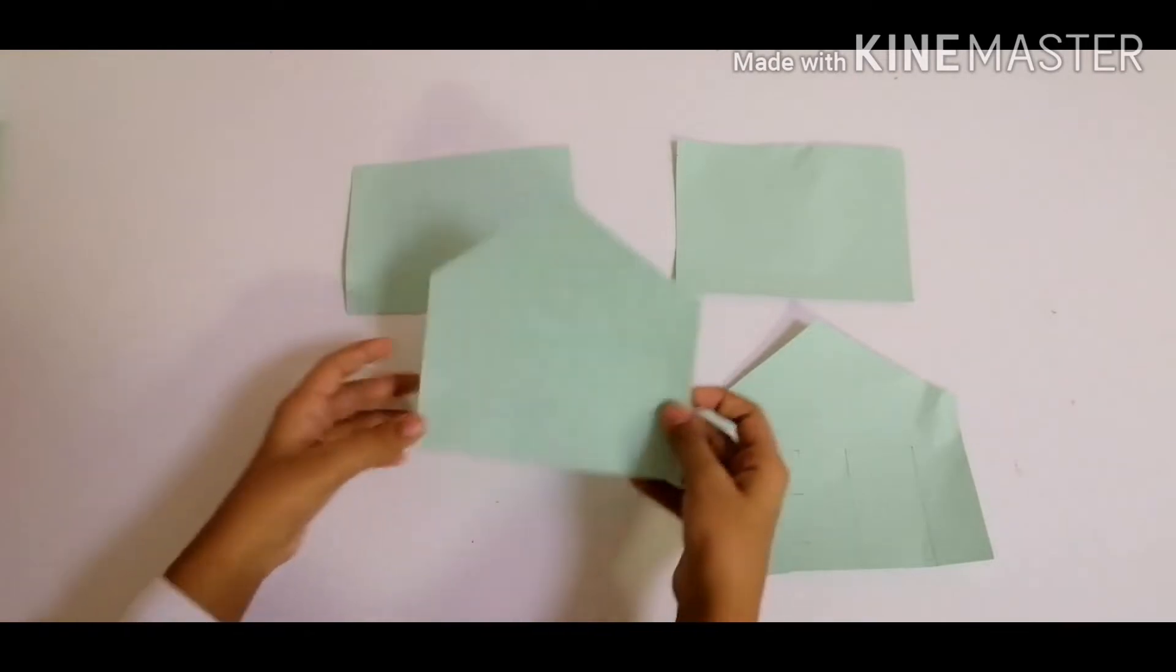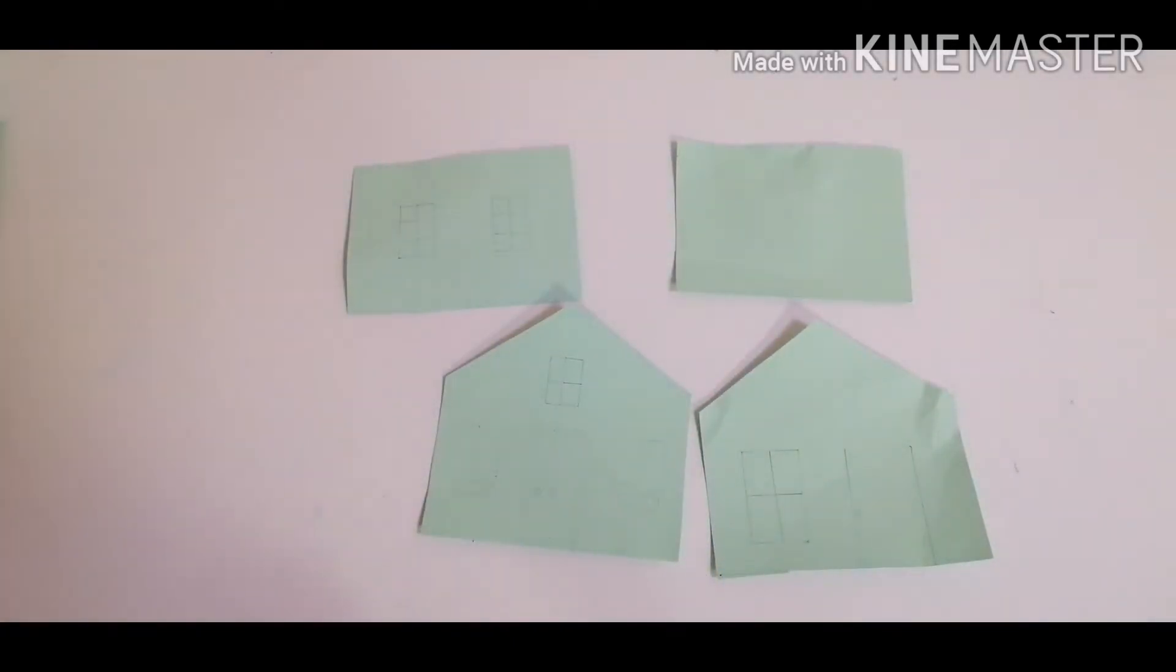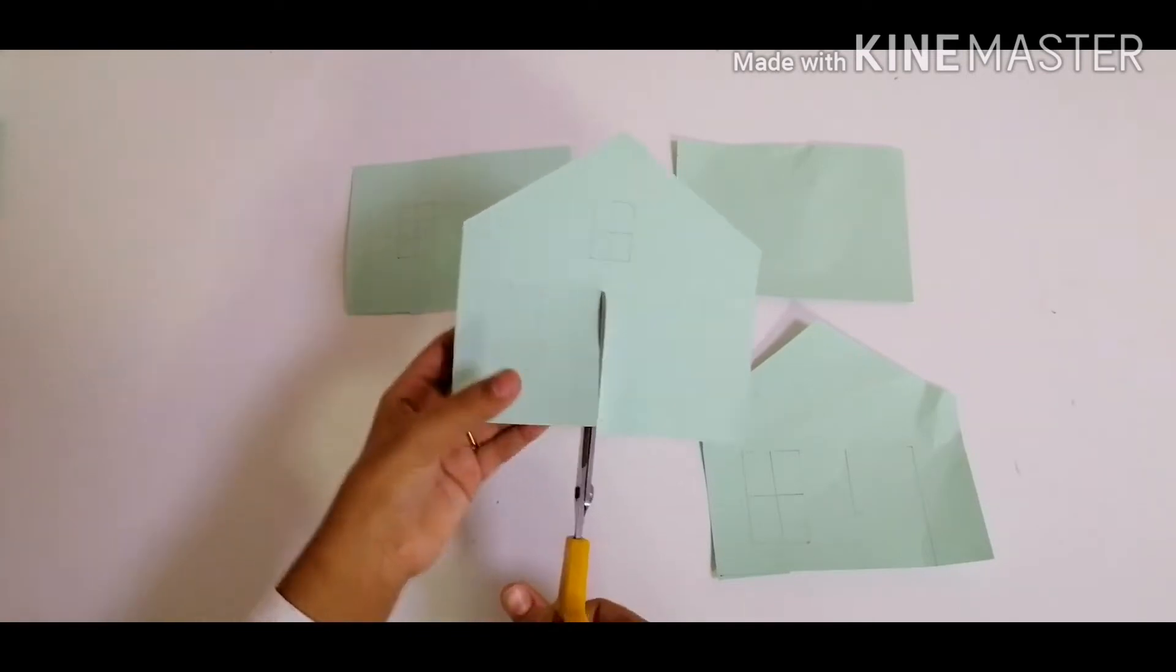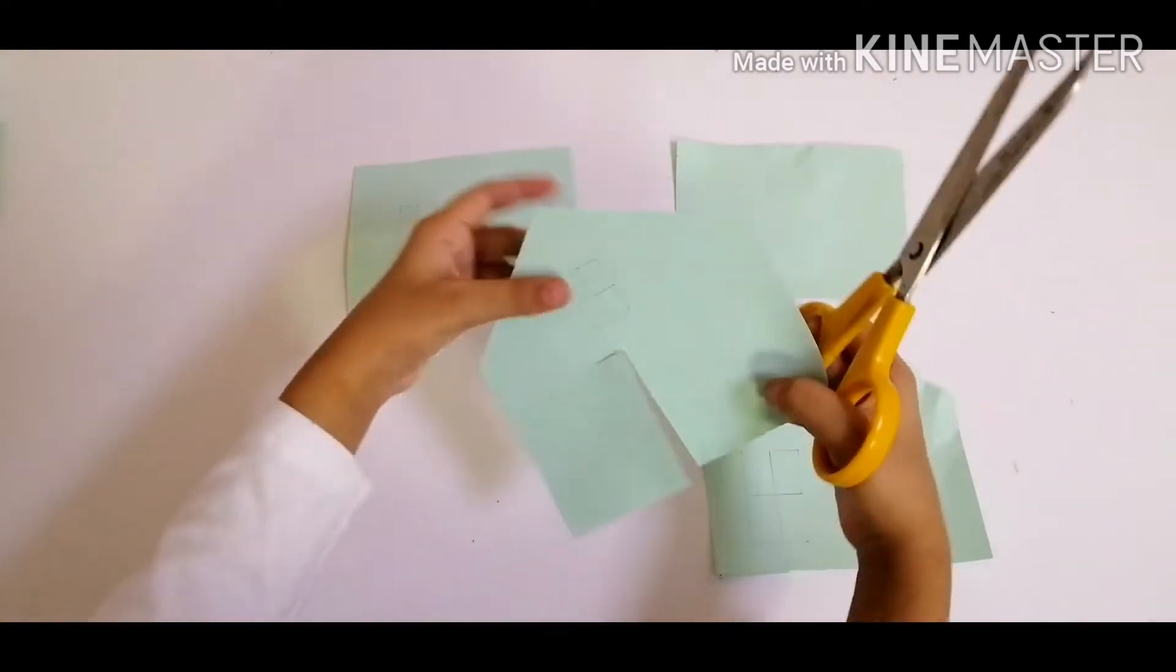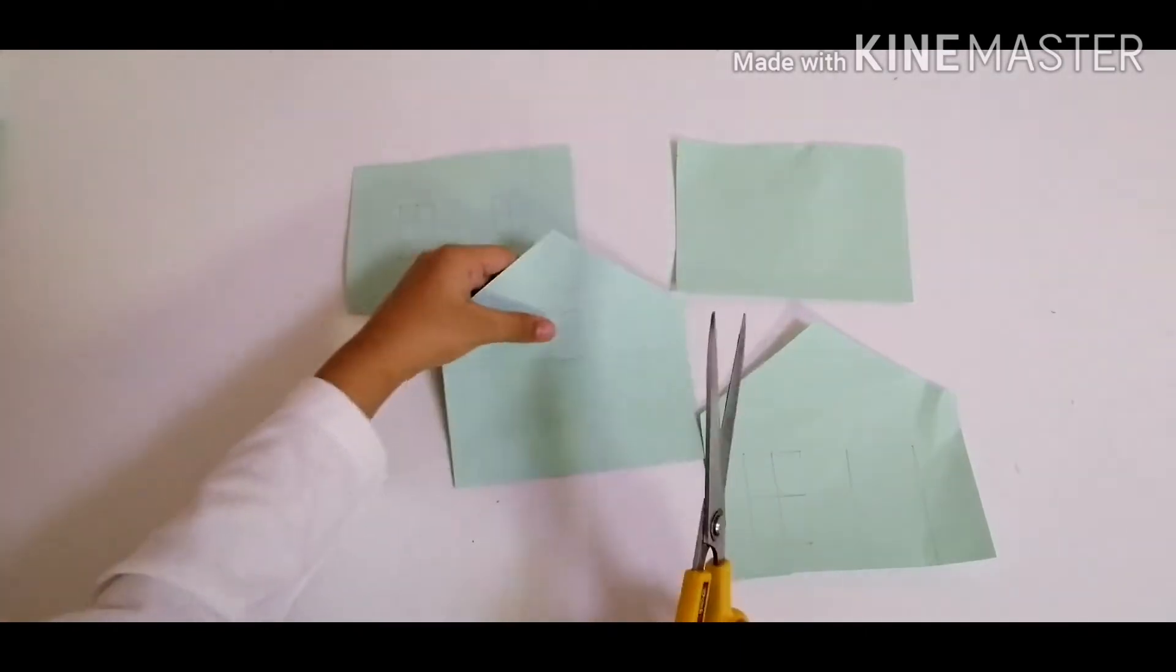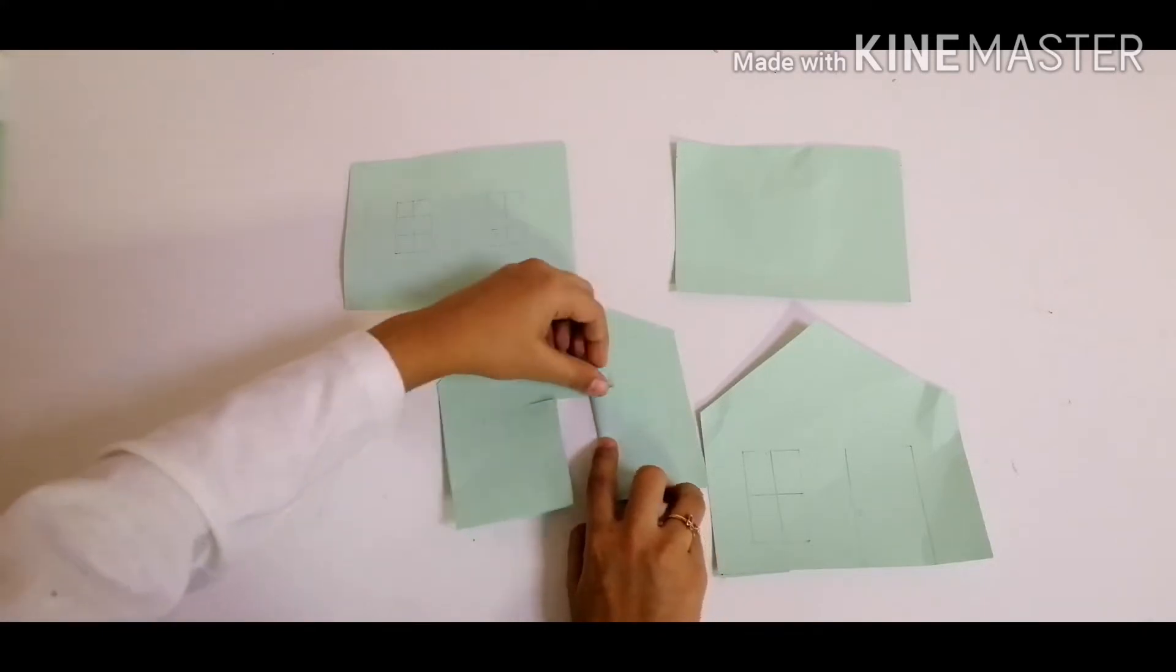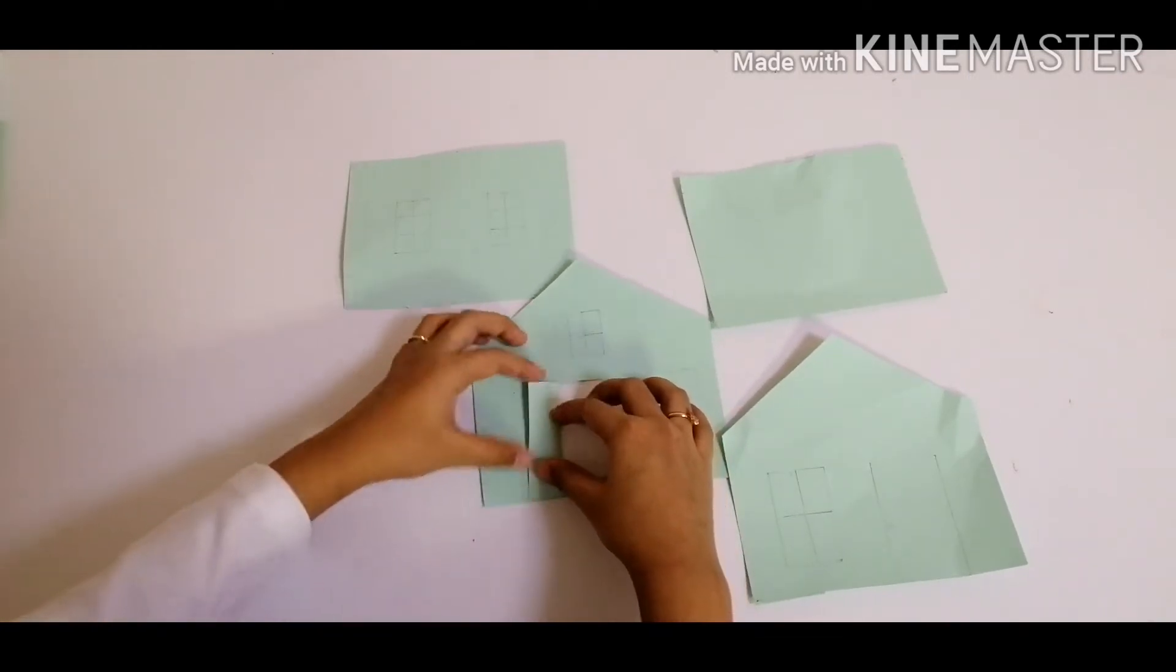Now we are going to cut the door, just going to cut from the middle and from the upper side. Now let's fold it so it will be easier to close it. Repeat the other side, repeat the same step.